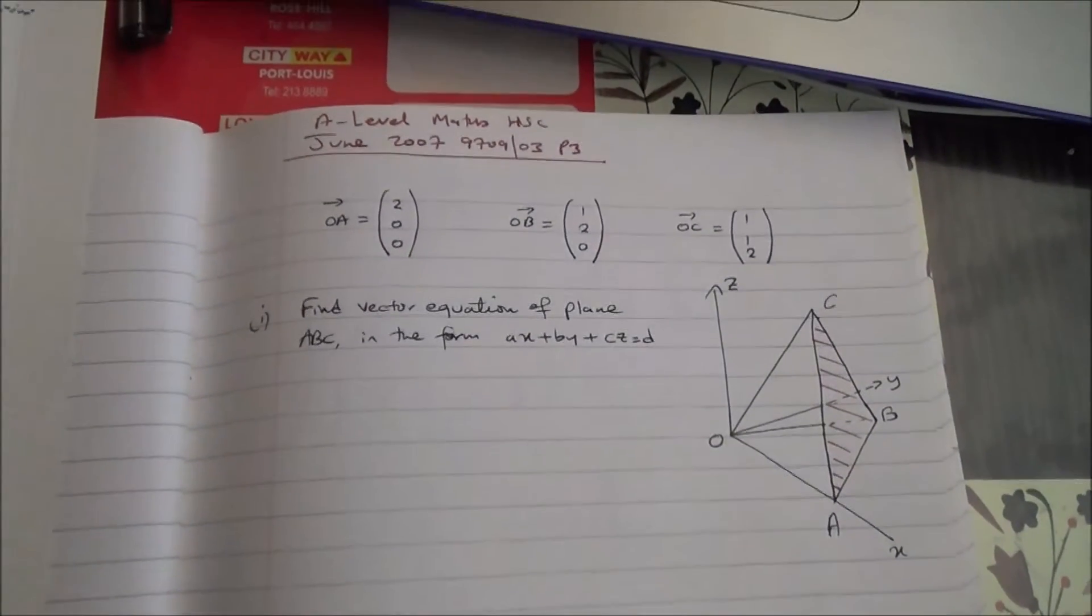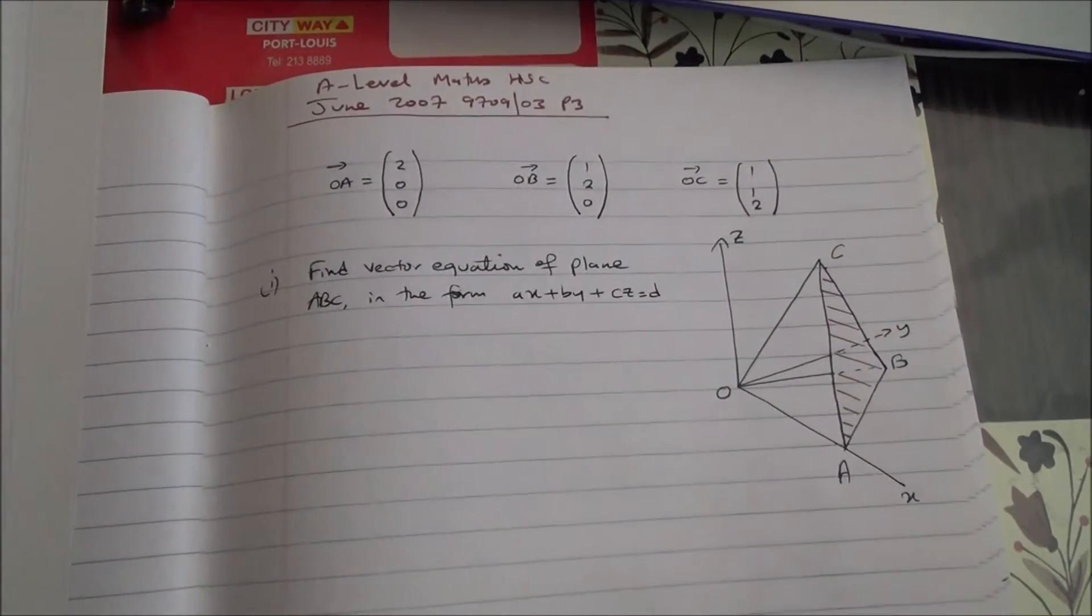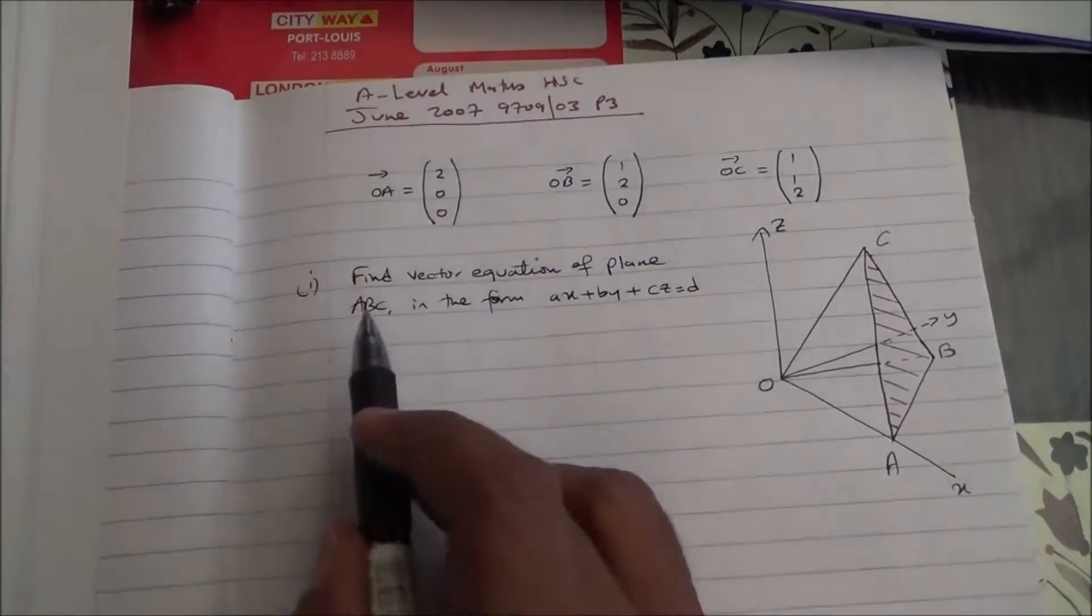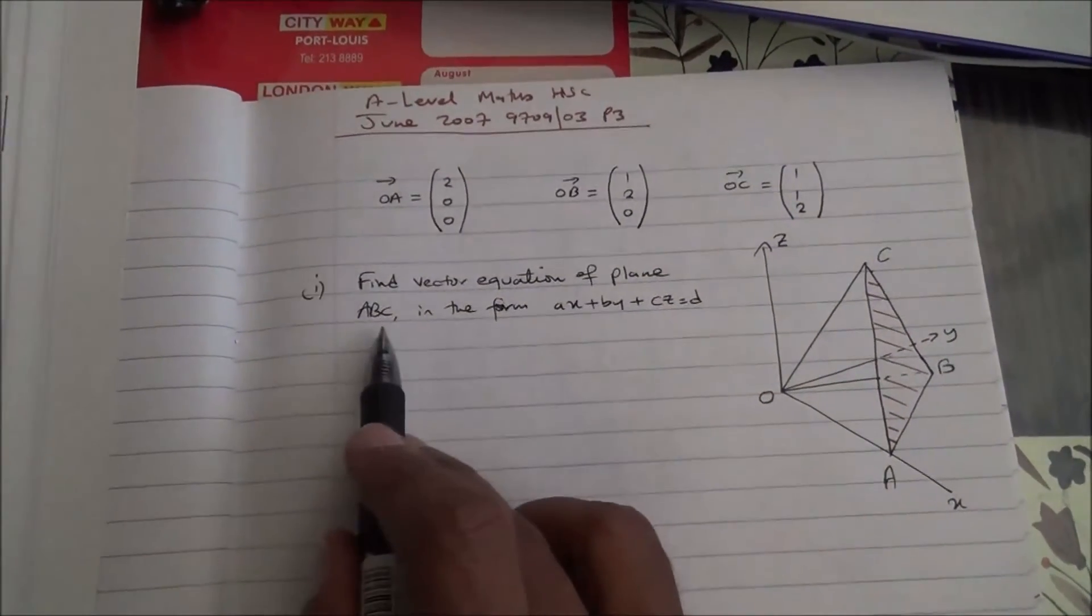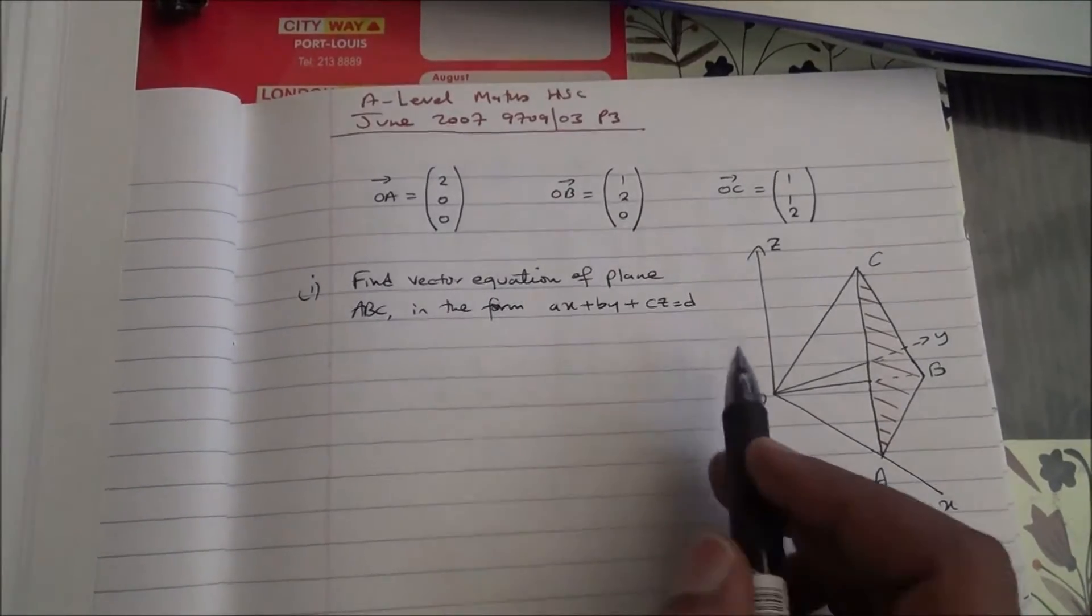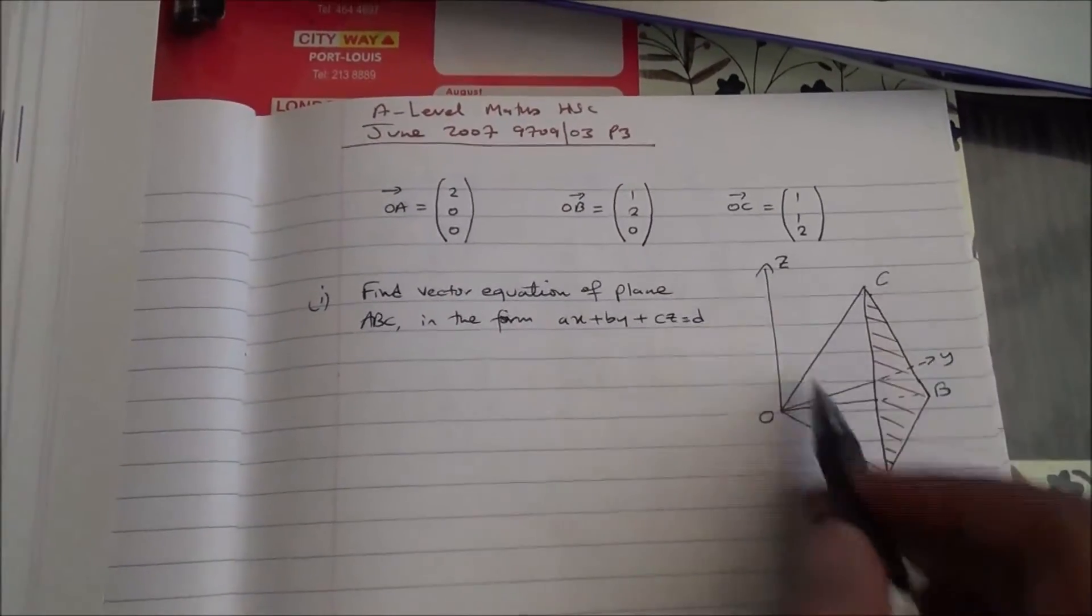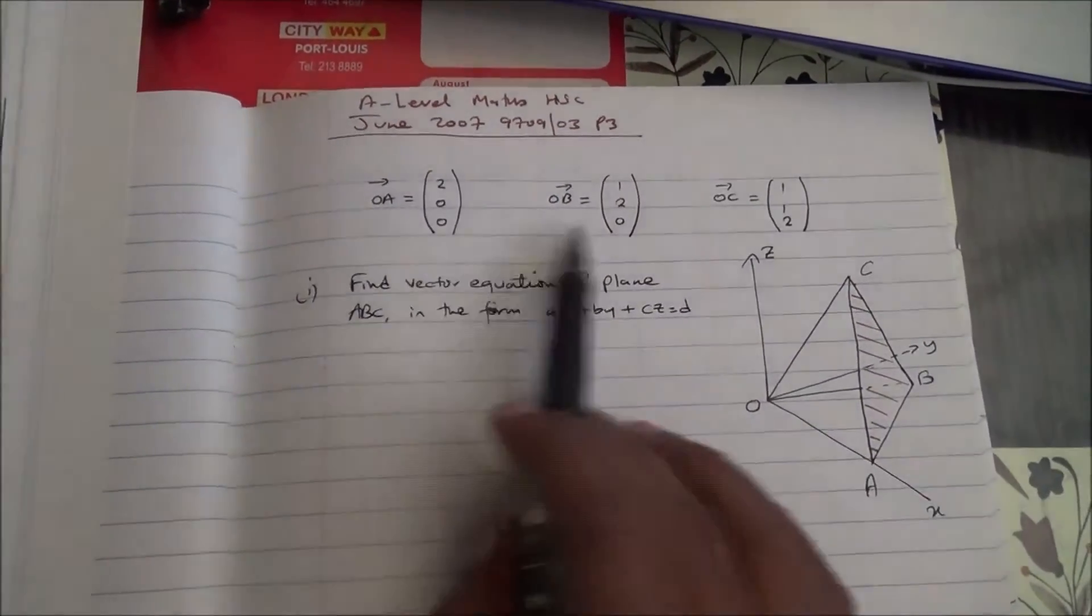Hi, and this question is taken from June 2007, A-level Maths HSEP3. Find the vector equation of the plane in the form AX plus BY plus CZ is equal to D. This is the first part of the question, and here's the diagram, and here are the coordinates.